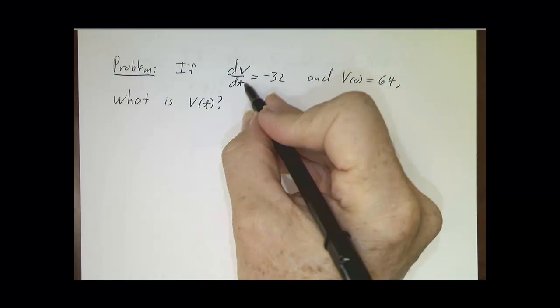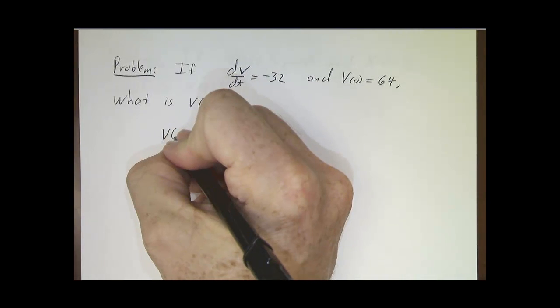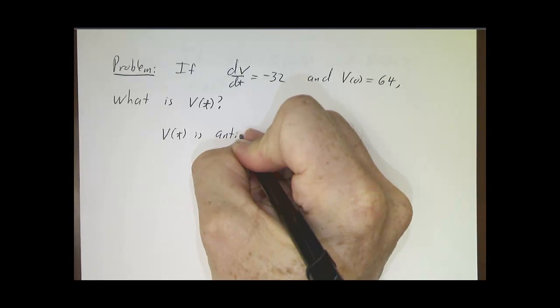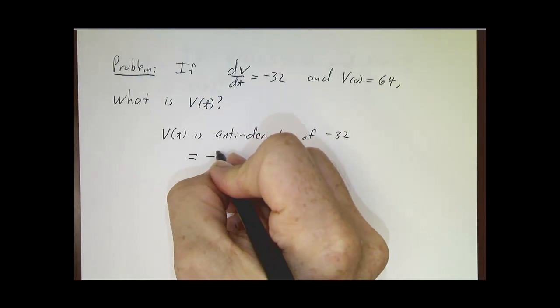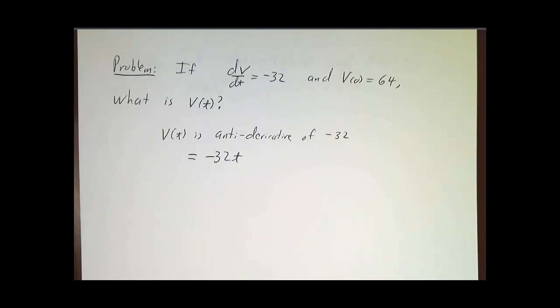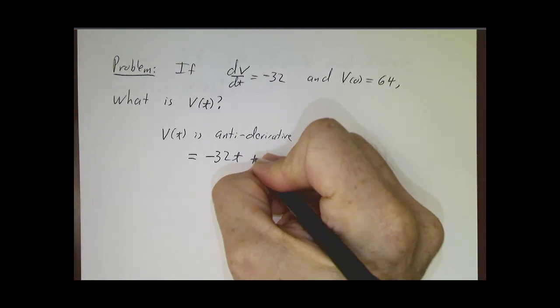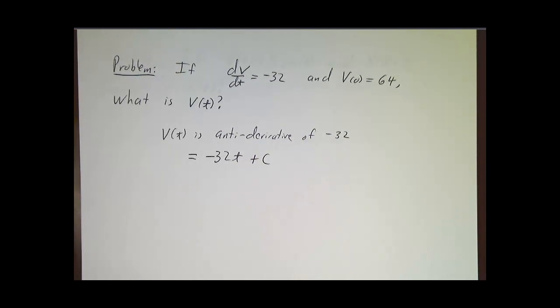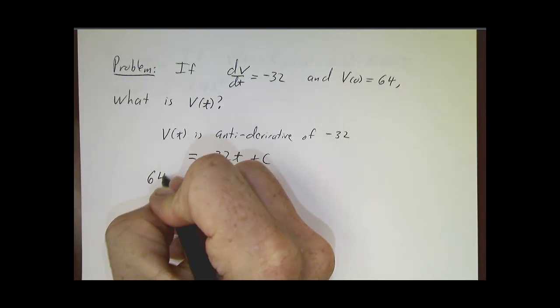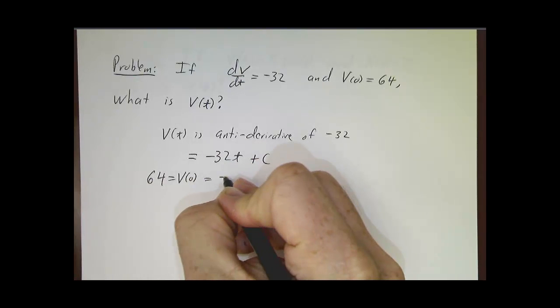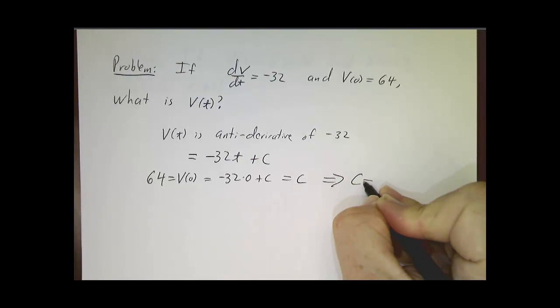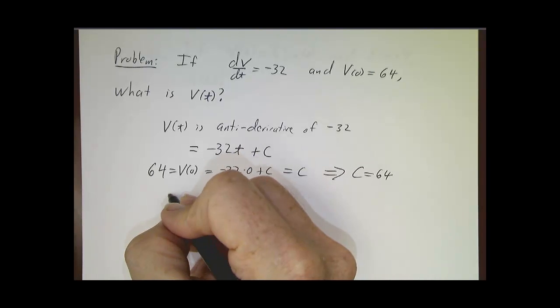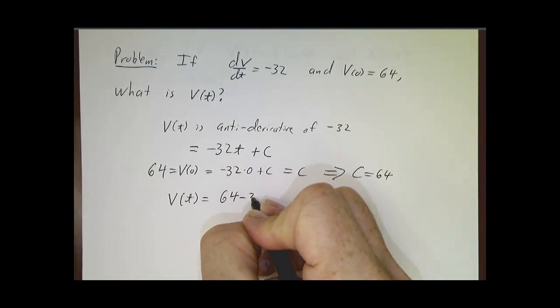Well, we know that the derivative of v is negative 32, so v is the antiderivative of negative 32, and that's negative 32t plus a constant. And the way we figure out the constant is we plug in the value of v at 0. We say 64 is v at time 0 is negative 32 times 0 plus c is c, so c is 64. And from that, we figure out the velocity at all time is 64 minus 32t.